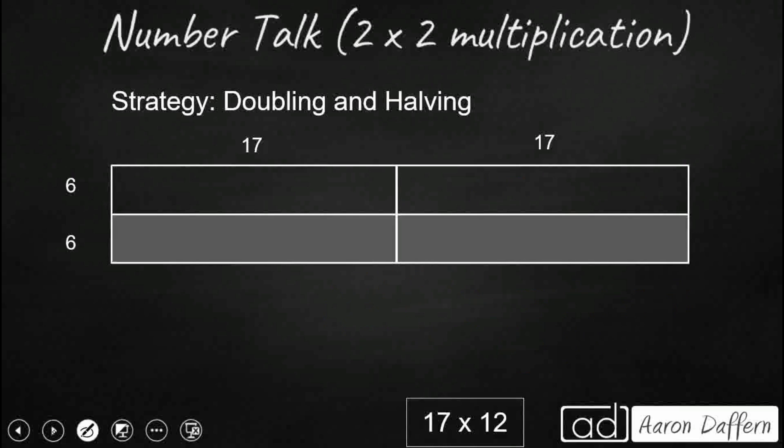Now, one way that we could do it here is we could also double and half it. So double and halfing, what that does is it takes our two factors, and it takes one of them and doubles it. So you notice our 17 here, we're going to double that. We're going to make that 34. So I've got two 17s. So I'm going to double one of my factors, double 17 up to 34.